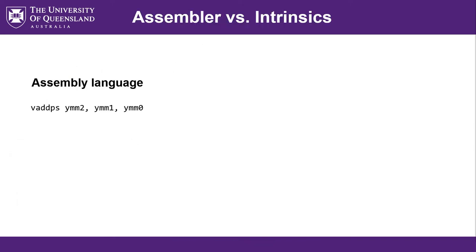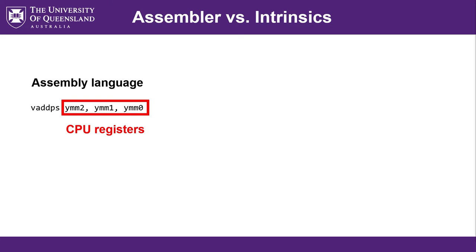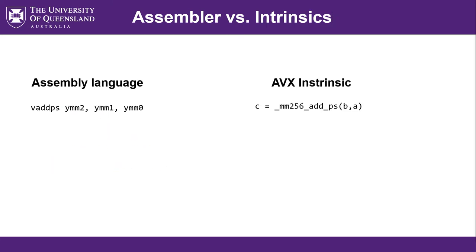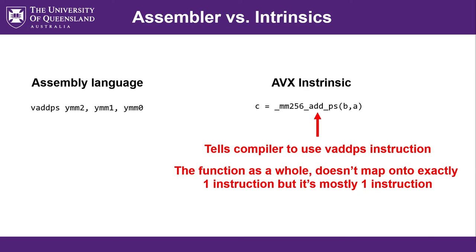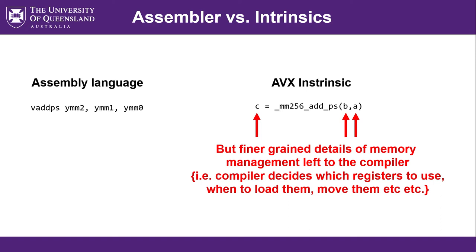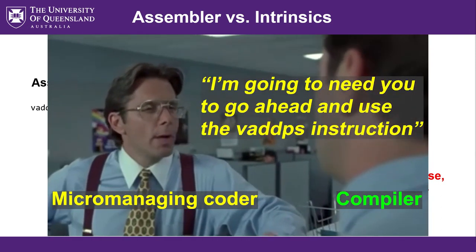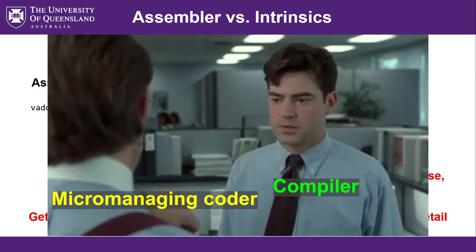You can get most of the performance gains using intrinsics without having to do full-on assembly. With assembly, you're writing lines of code that map directly onto binary machine code — you have to specify exactly which registers of the CPU to use, every detail manually. For instance, a single precision float vector add operation in assembly tells the CPU to perform a vectorized addition on specific registers. With an intrinsic it's similar but in a slightly more abstracted way, more like a traditional function call in C or C++. We call this function which almost directly maps onto the vaddps assembly instruction — we specify the inputs and output, but the really fine-grained detail of which CPU registers to use is still handled by the compiler.